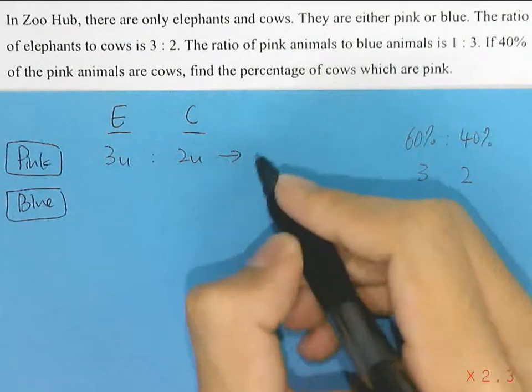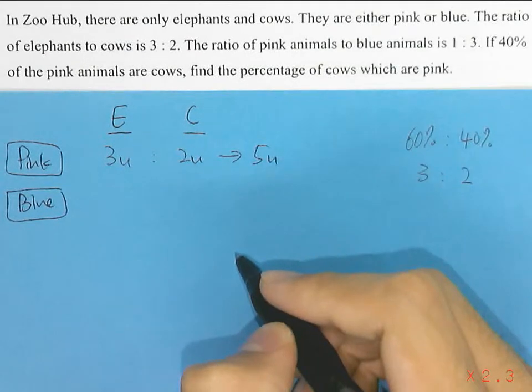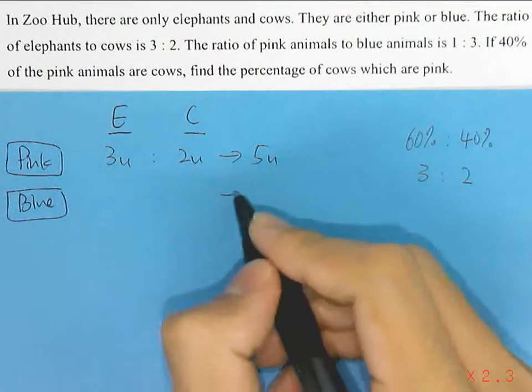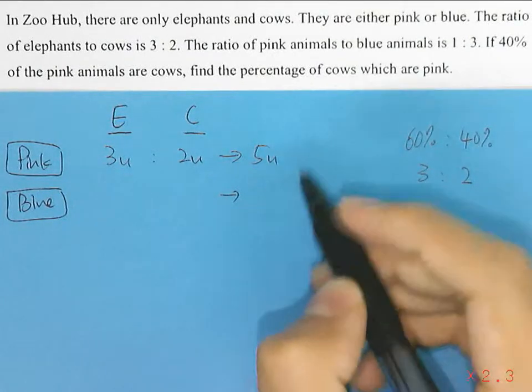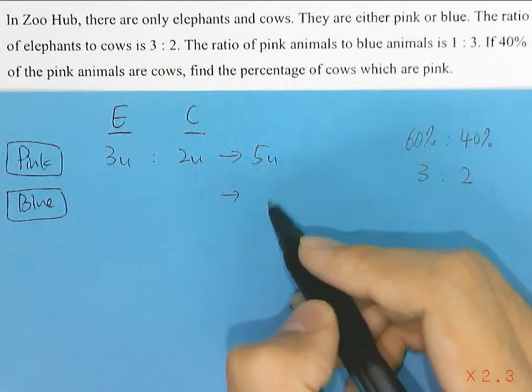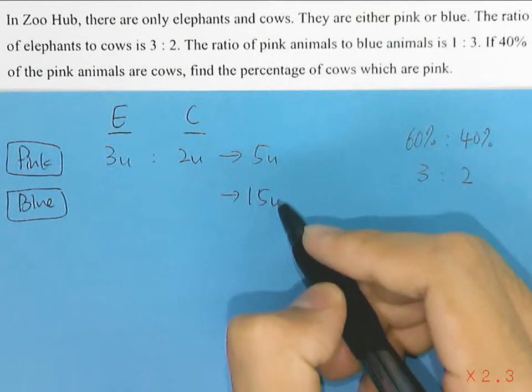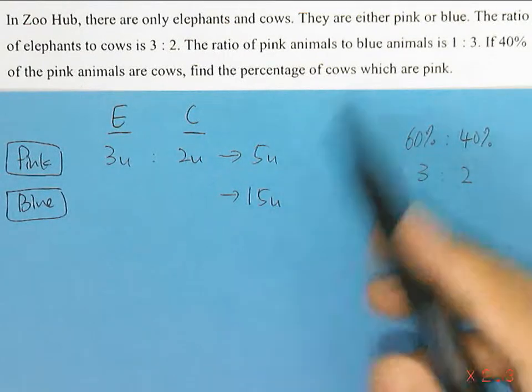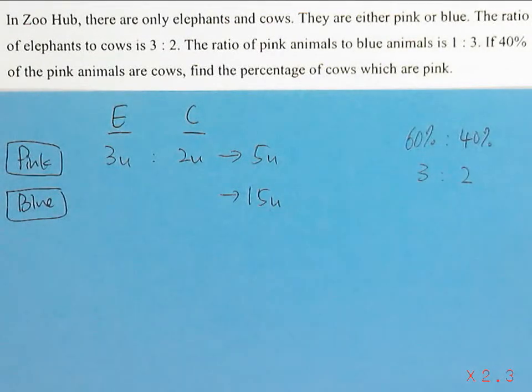Since the ratio of pink animals to blue animals is 1 to 3, this 5 units to the blue animals should be 1 to 3. From here we can deduce that blue animals will be 15 units, because 5 to 15 is equal to 1 to 3.